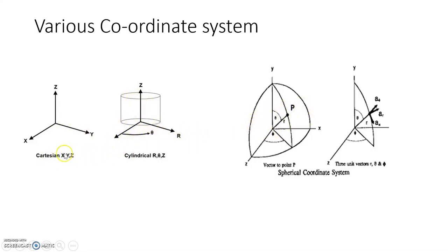In the Cartesian coordinate system, x, y, z are the variables and the range of x, y, z are minus infinity to plus infinity. In the Cylindrical coordinate system, the variables are r, theta, and z. The r means radius. The range of r is 0 to infinity, the range of theta is 0 to 2pi, and the range of z is minus infinity to infinity.